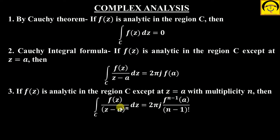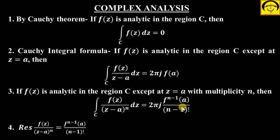Whatever comes, we divide by (n−1) factorial here. And this term that you get is called the residue. The residue of f(z) upon (z minus a) raised to the power n equals the nth derivative of f at z equal to a divided by factorial (n−1). Based on this, we'll do some questions today.